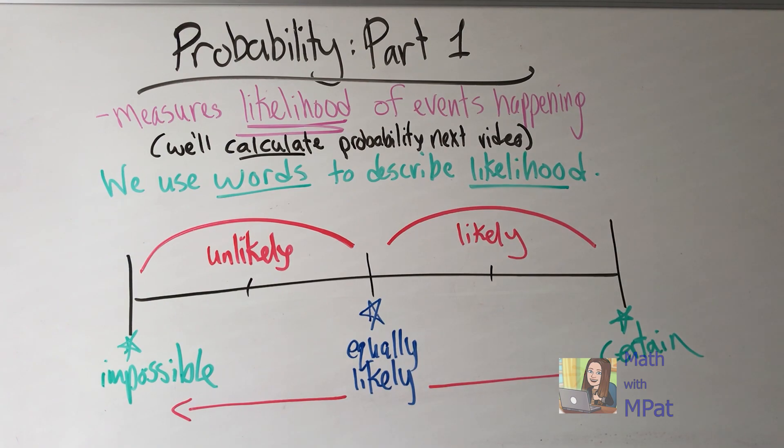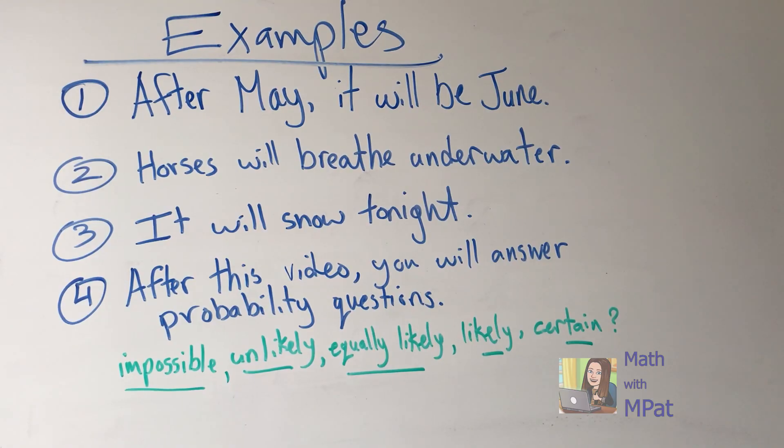Now let's look at some examples. Alright, some examples. Number one: after May, it will be June.